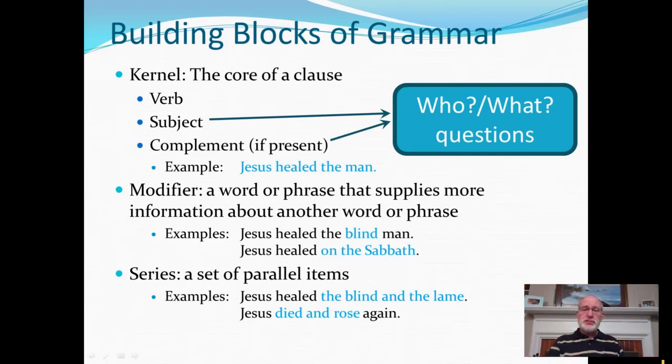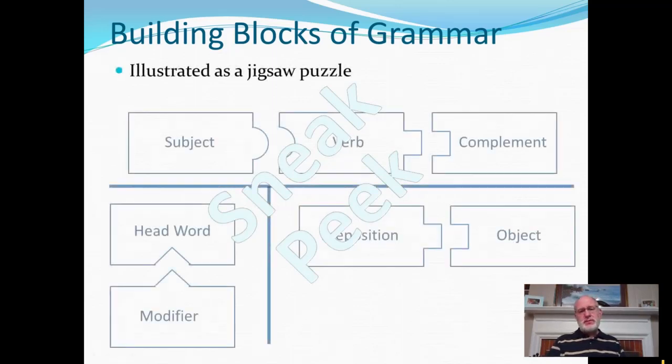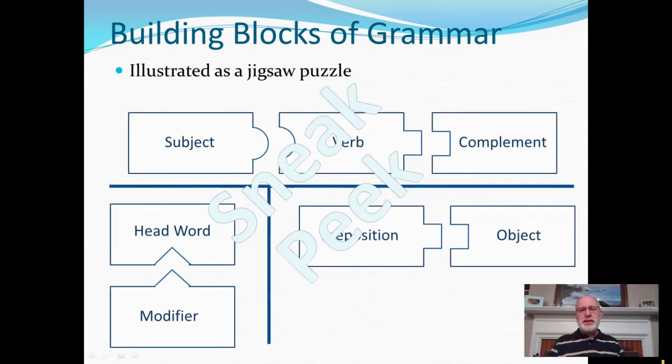And this, of course, is very, very common. And I've given you a series of only two, but sometimes you have series that are quite, quite long. All right, so that's the end of this video. I'll give you a sneak peek for what's coming next as we pursue further these building blocks of grammar. We're going to talk about grammar as a jigsaw puzzle. And these are not real attractive jigsaw puzzle pieces, but I think they give you the idea of how subject, verb, and complement kind of fit together a little bit like puzzle pieces, headwords and modifiers, prepositions and objects. So we'll get into that in part two.